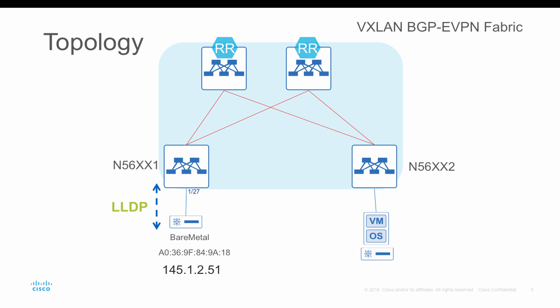I have a simple setup with the VXLAN eVPN fabric, and Nexus 5600 series switches are used for the LLDP tenant automation for the overlay traffic. Today's focus is on the highlighted device in the diagram, where we have LLDP from the bare metal server towards the Nexus 5600 device on port 127.